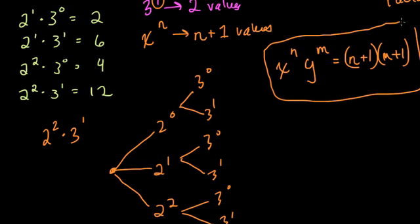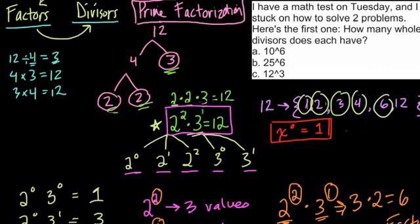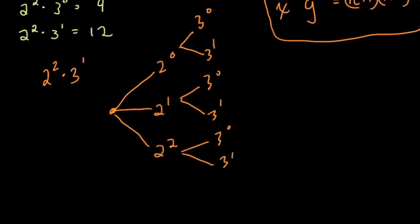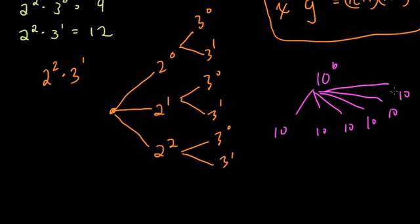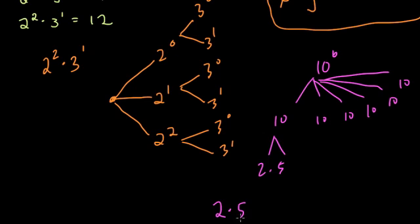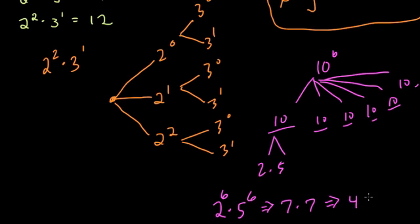This formula is going to allow you to quickly analyze how many factors the numbers in this question have: 10 to the 6th, 25 to the 6th, and 12 to the 3rd. Let's start with 10 to the 6th. That's 10 times 10 six times, and each 10 is 2 times 5. So we have 2 times 5 repeated 6 times, which means it's 2 to the 6th times 5 to the 6th. So how many different factors does this have? It has 7 times 7 — that's 6 plus 1 times 6 plus 1 — which is 49 factors of this number.